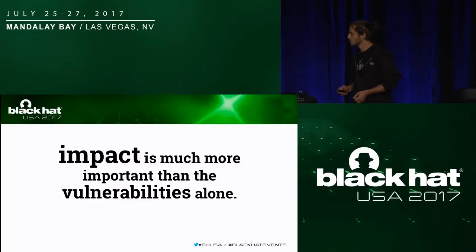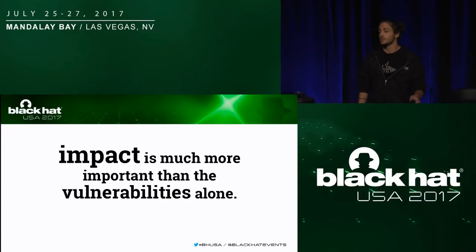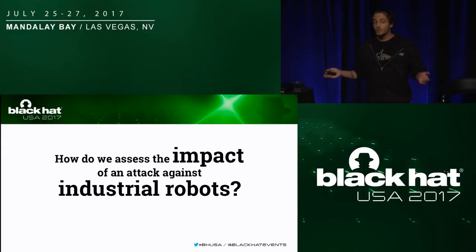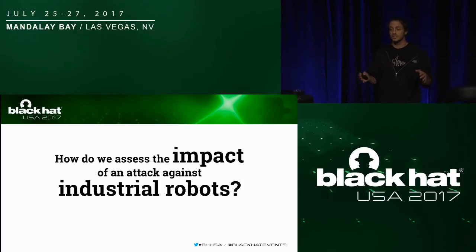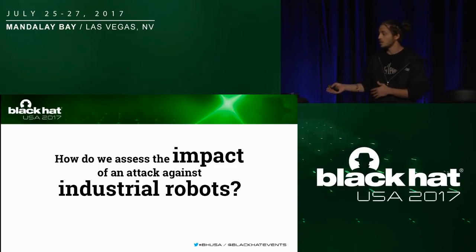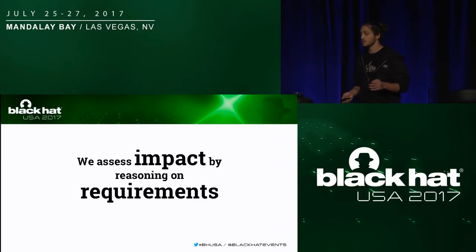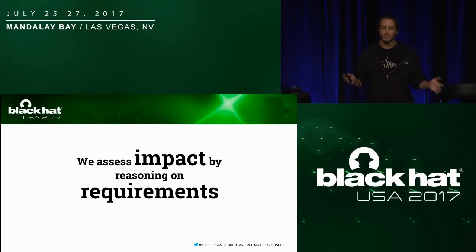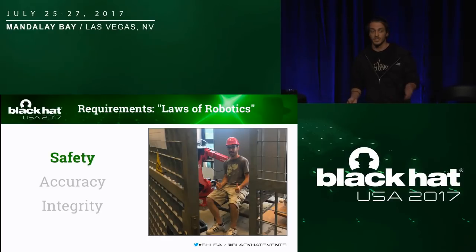As we have seen, the impact is way more important than the vulnerabilities alone. So how can we assess the impact of an attack against industrial robots? We can start reasoning about the survey answers, but we should also think of the requirements an industrial robot should have — something close to the laws of robotics of Asimov. The first requirement is safety: the robot should never harm the user.